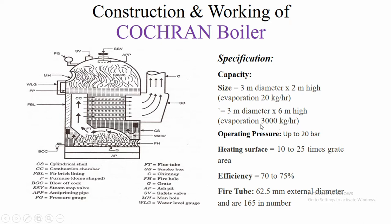The operating pressure is up to 20 bar. The heating surface is 10 to 25 times the grate area, and efficiency is around 70 to 75 percent. This is a fire tube boiler — specifically a vertical, multi-tubular fire tube boiler.